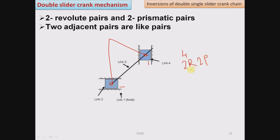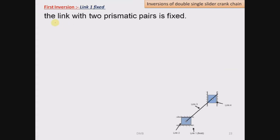So it is also called as 2R2P mechanism. Now in order to obtain the first inversion, link number 1 is fixed. Or we can say that the link with two prismatic pairs is fixed. As per the numbering which we have employed, link number 1 is having two prismatic pairs.